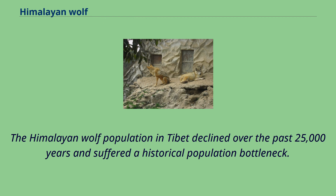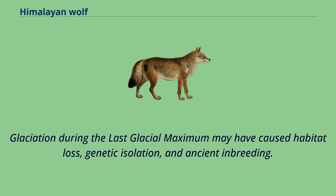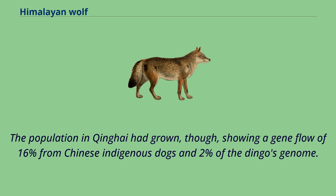The Himalayan wolf population in Tibet declined over the past 25,000 years and suffered a historical population bottleneck. Glaciation during the last glacial maximum may have caused habitat loss, genetic isolation, and ancient inbreeding. The population in Qinghai had grown, though, showing a gene flow of 16% from Chinese indigenous dogs and 2% of the dingo's genome.